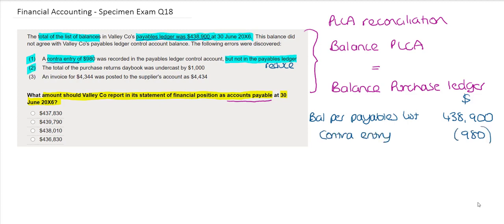The next error tells us that the total of the purchase returns day book was undercast by $1,000. The individual credit notes in the purchase returns day book would have been updated in the payables ledger however the totals would have been updated in the general ledger and so therefore this undercast relates to our purchase ledger control account and therefore does not affect our list.